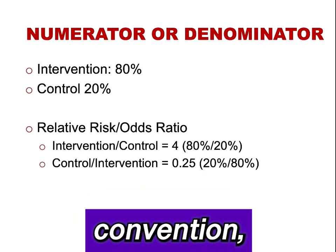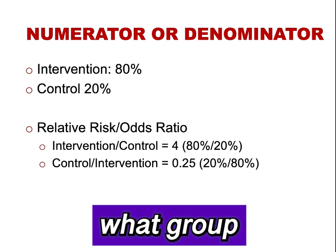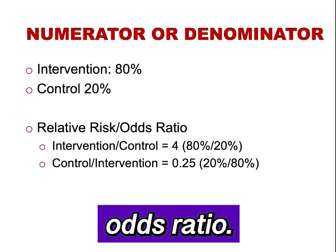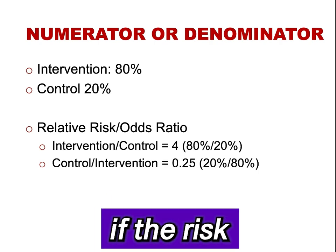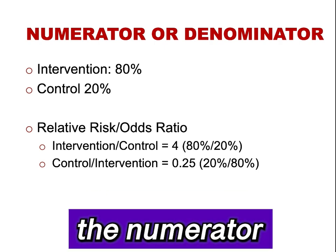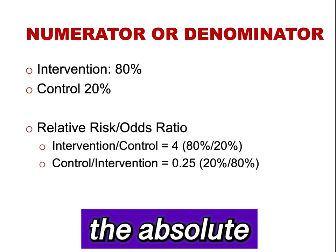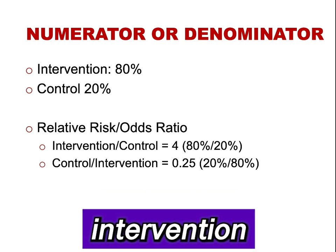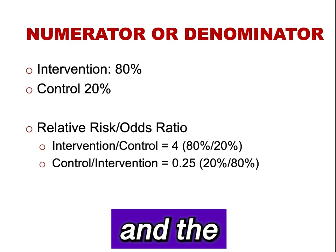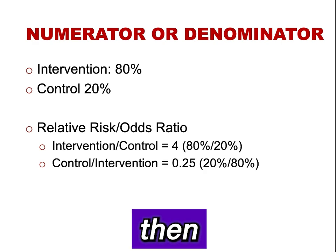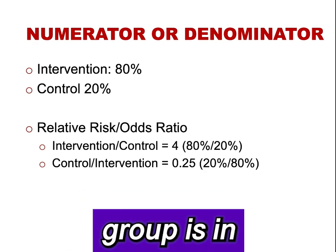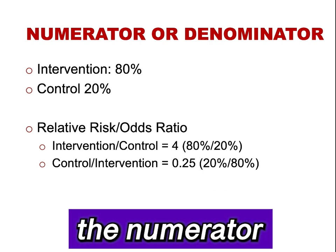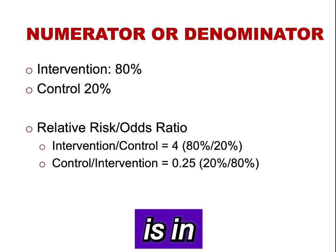Authors don't always follow convention, and it is essential to determine what group is in the numerator and what group is in the denominator to interpret a relative risk or an odds ratio. If it is unclear whether the risk in the intervention group is in the numerator or the denominator, it is helpful to examine the absolute risk in each group. If the absolute risk in the intervention group is greater than in the control group and the relative risk is greater than 1, then the intervention group is in the numerator. If the relative risk is less than 1, then the control group is in the numerator and the intervention group is in the denominator.